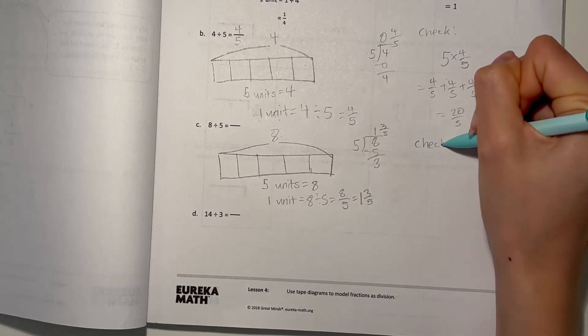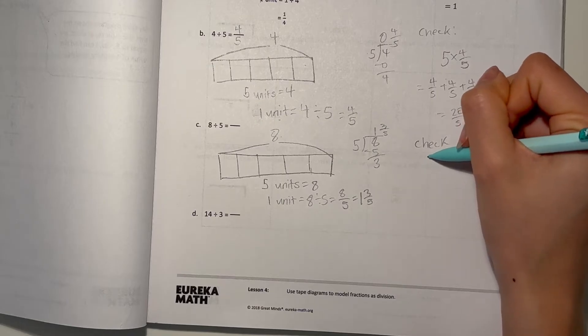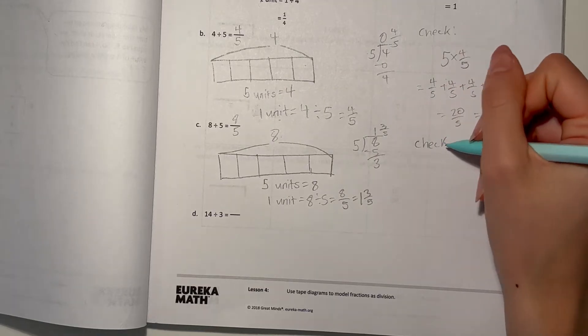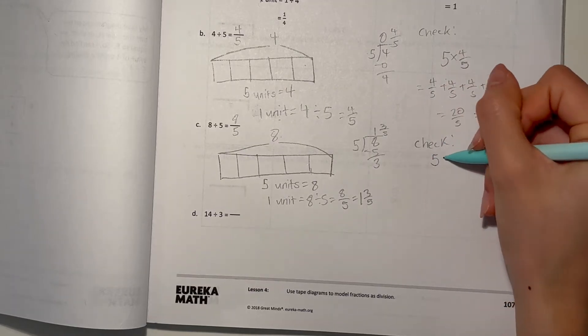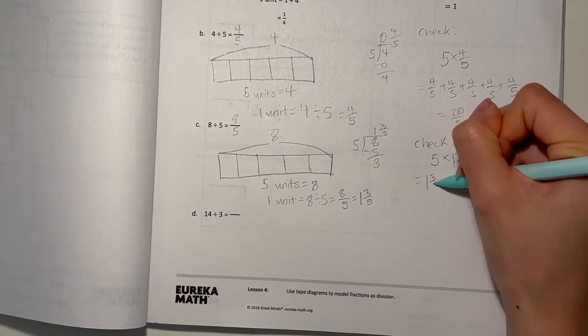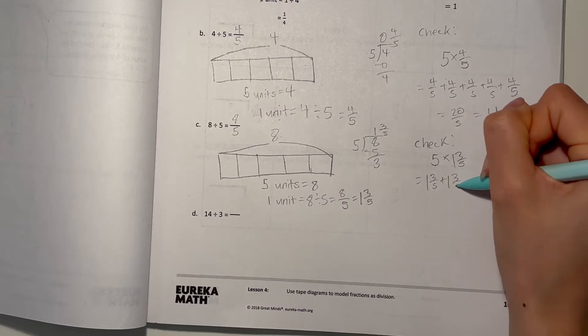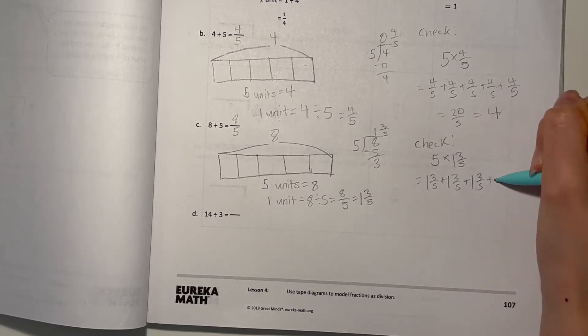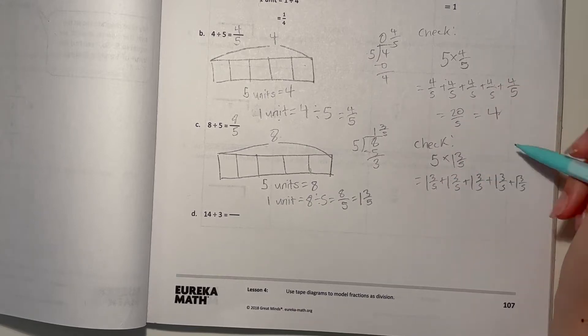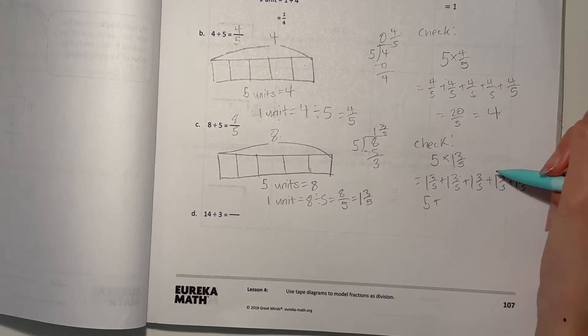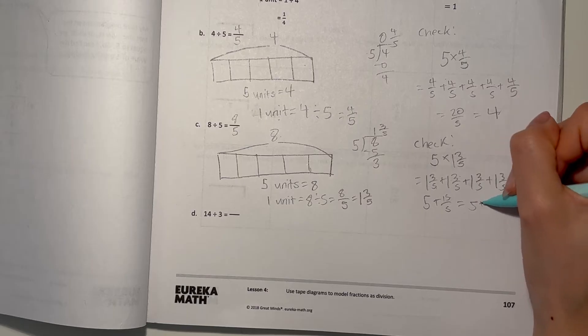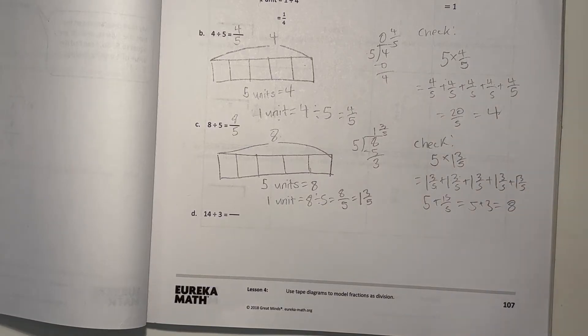And to check our work. We do 5 times 1 and 3 fifths. Which is 1 and 3 fifths, plus 1 and 3 fifths, plus 1 and 3 fifths. Which is 5 plus 3, which is 8. So our numbers match up.